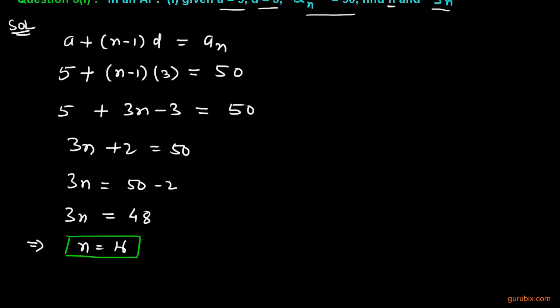Now we can easily find the value of Sn using the formula Sn = n/2 × (first term + last term). Since n is 16, we have 16/2. The first term is 5 and the last term is 50.